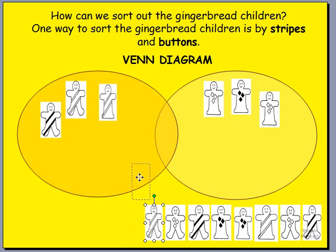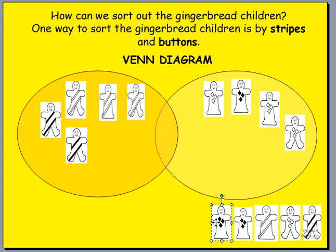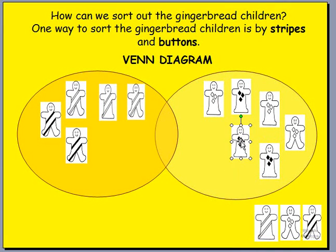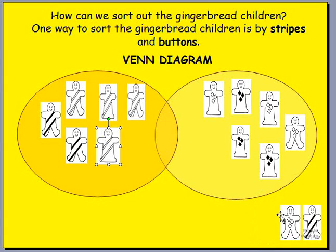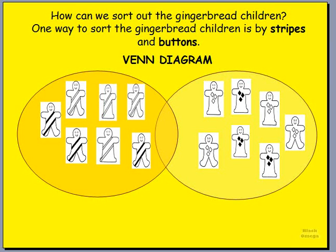The next one has stripes as well, and that will go to the left. So you should start to see a pattern here — we are sorting them out depending on who has stripes and who has buttons. The next one is buttons, off to the right circle. Stripes to the left. Buttons to the right. Stripes to the left. And the last two: one has buttons and the last one has stripes. Boys and girls, if you look at the two circles on the page, you should see that we have sorted out the gingerbread children because a group of them had stripes and the other group had buttons. That is the one attribute we used to sort them out and put them into groups.